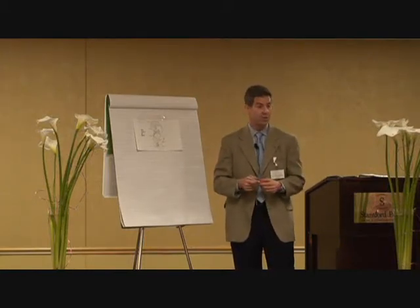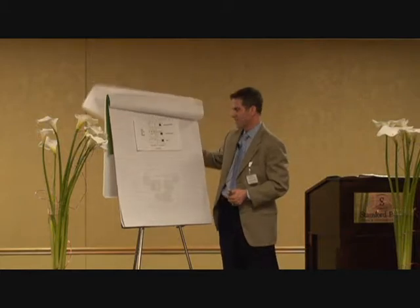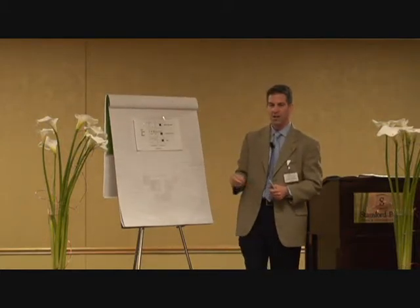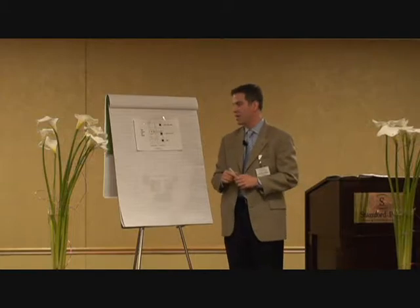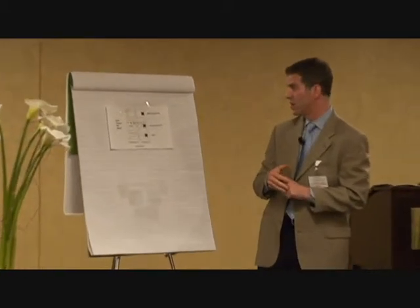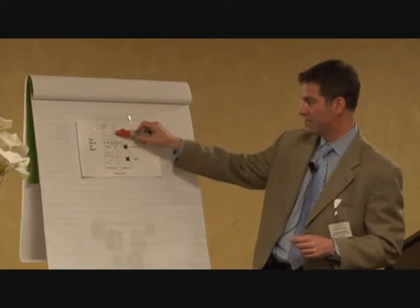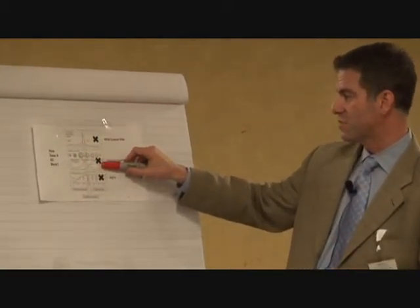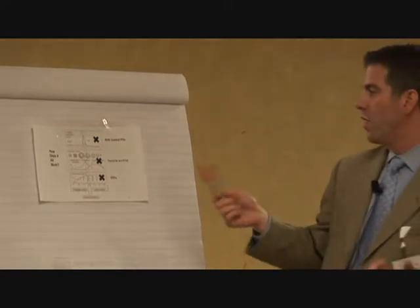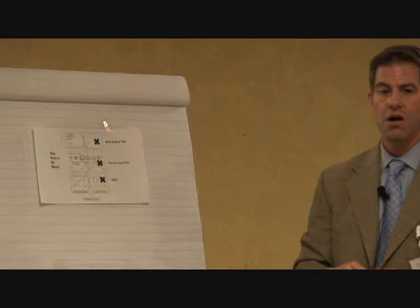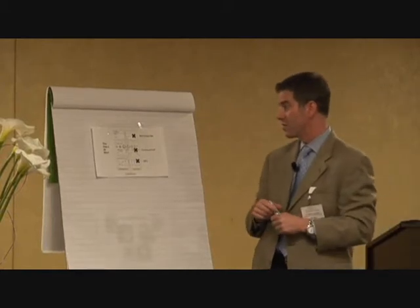As women transition from childhood into puberty, the menstrual cycle begins to work. There are three boxes: box one is the brain — FSH and LH; box two is the ovary — estrogen and progesterone secreted; box three is the uterus. These three pieces have to work in sequence and together, and if they don't work together, there is dysfunction.